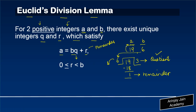So for every two positive integers, 19 equals 6 times the quotient 3 plus the remainder 1. Euclid's division lemma says that for any two positive integers the formula a equals b times Q plus R holds true, where a and b are the positive integers, Q is the quotient, and R is the remainder. The rule is that R is always greater than or equal to 0 and less than b. In our case R is 1, which is greater than 0 and less than b which is 6.